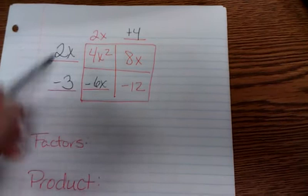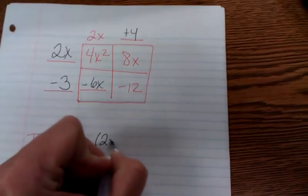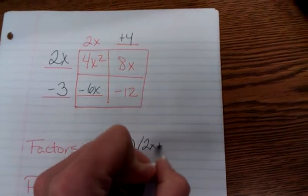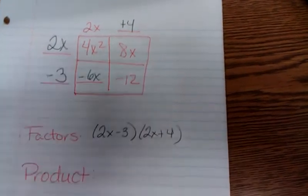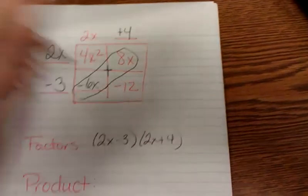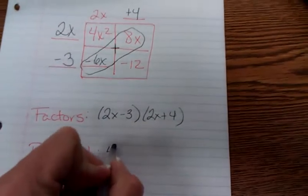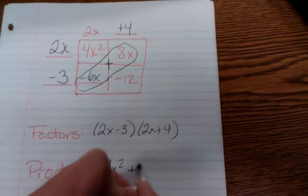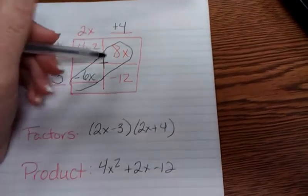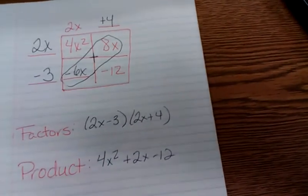My factors are what's on the outside. 2x minus 3 times 2x plus 4. My product, let's add these together inside here. And I have 4x squared plus 2x minus 12. Remember, 8 minus 6. Because 8 plus a negative 6 is a positive 2.